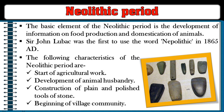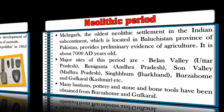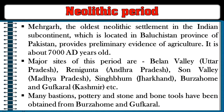The basic element of the Neolithic period is the development of food production and domestication of animals. Sir John Lubbock was the first to use the word 'Neolithic' in 1865 AD. Characteristics of the Neolithic period include the start of agricultural work, development of animal husbandry, construction of polished stone tools, and the beginning of village communities. Mehrgarh, the oldest Neolithic settlement in the Indian subcontinent, located in Baluchistan province of Pakistan, provides preliminary evidence of agriculture and is about 7,080 years old.